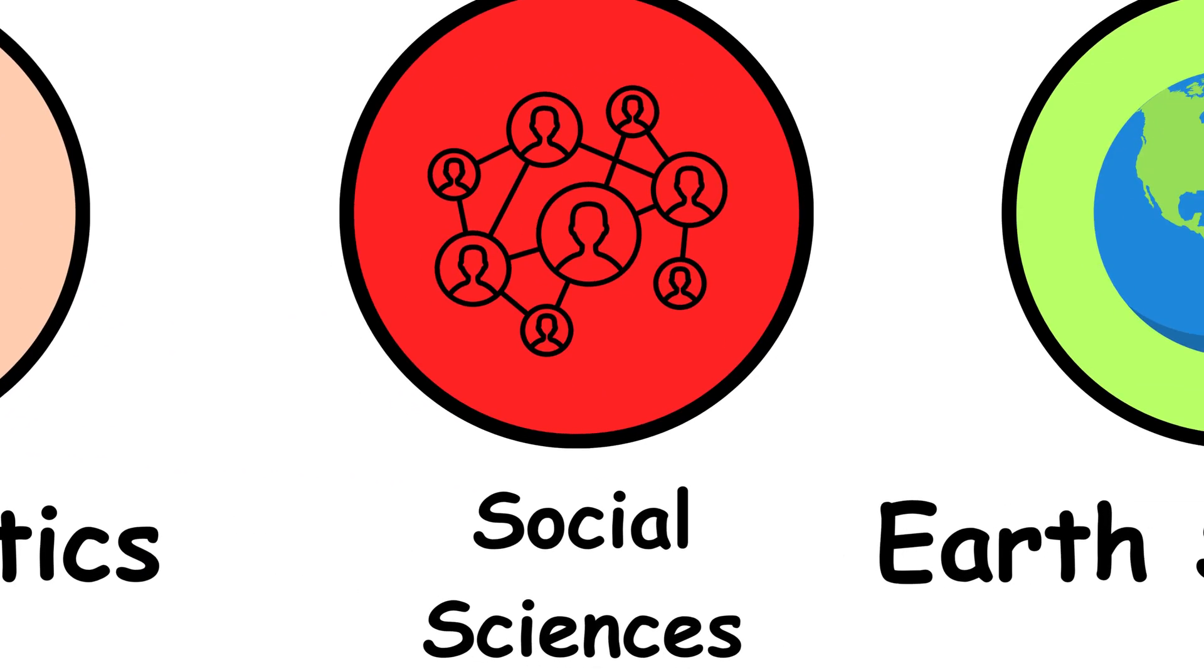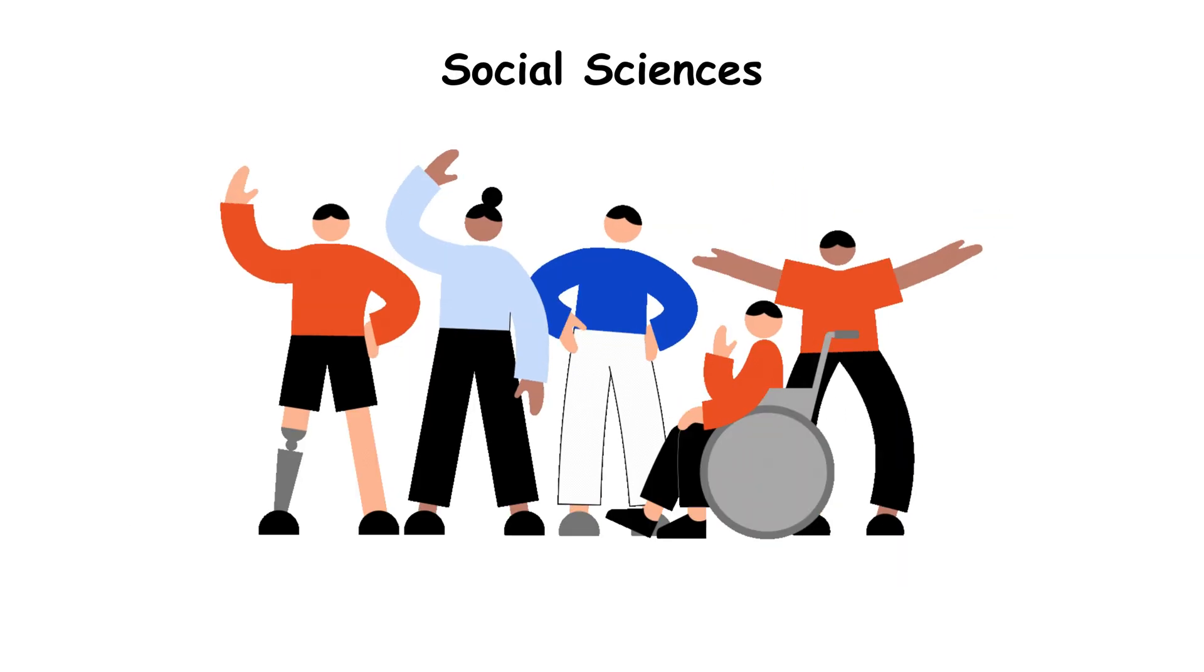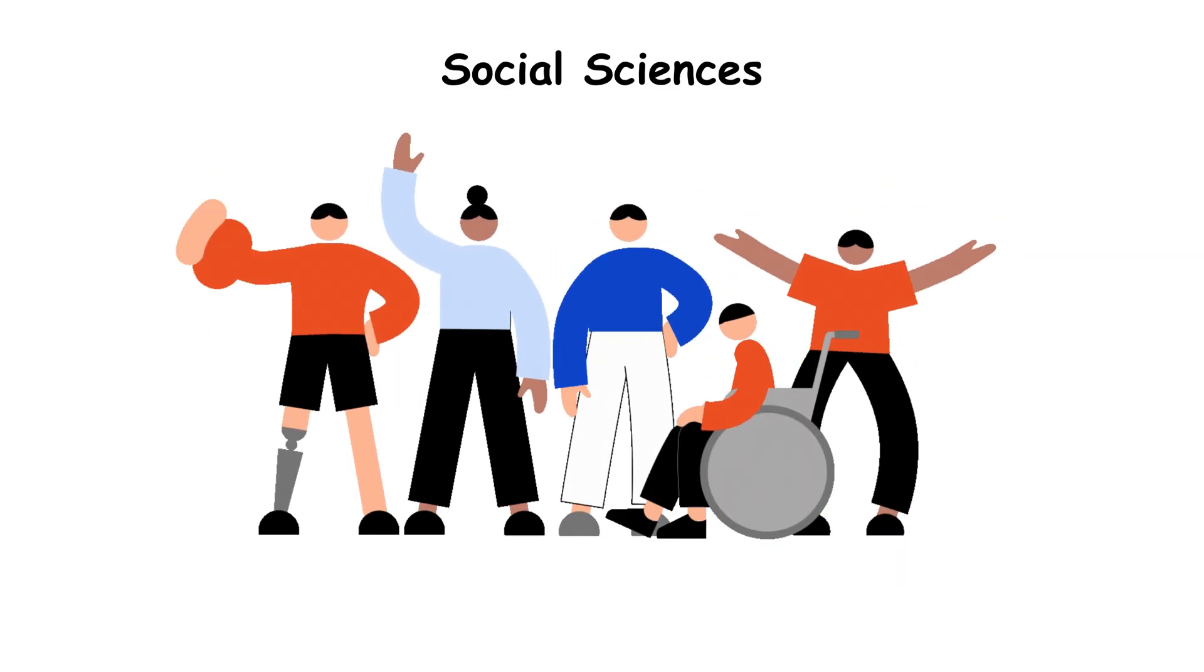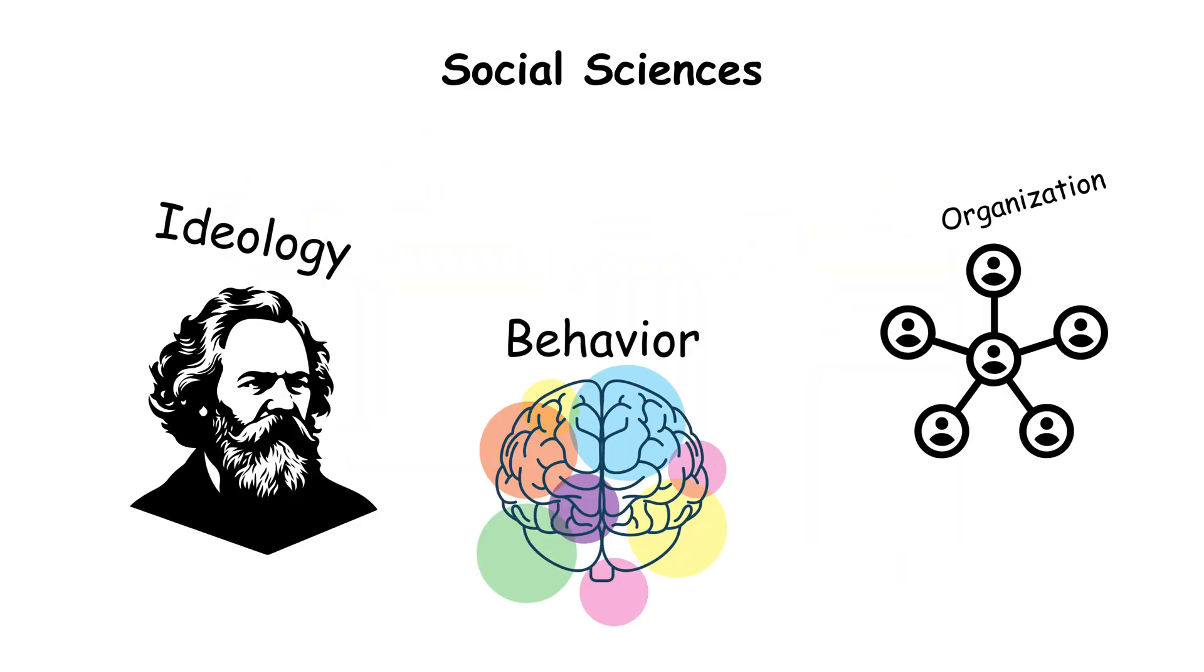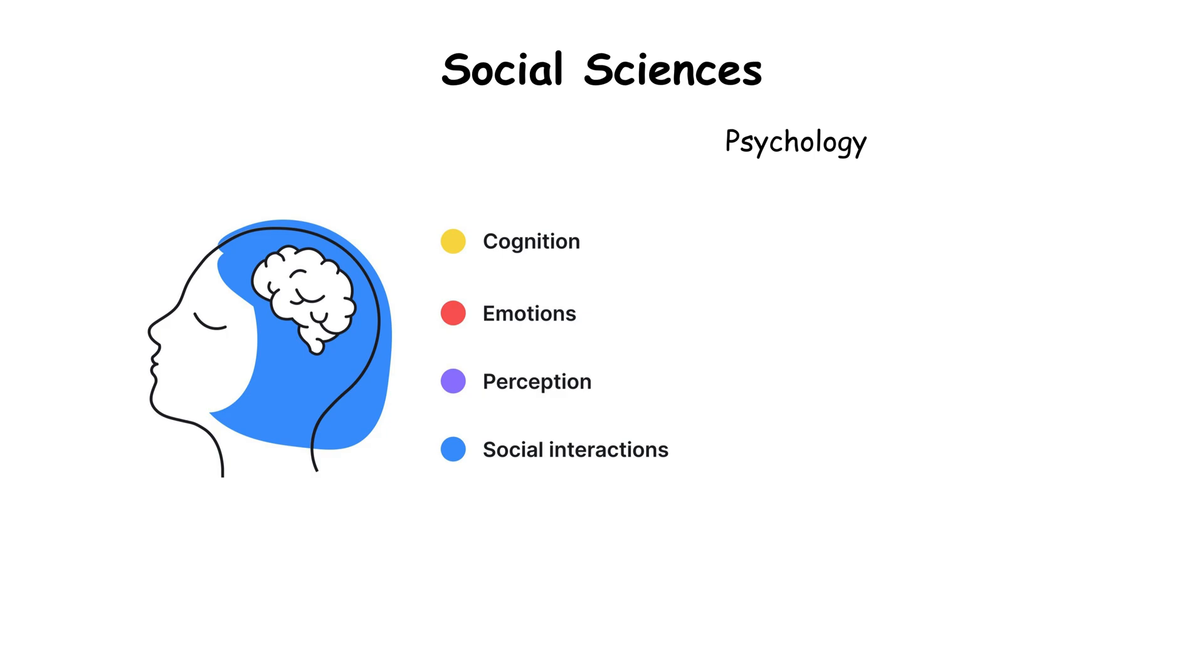Social sciences, the study of society. Social sciences explore what makes people tick, how we think, behave, and organize ourselves. Psychology looks inward, focusing on the mind.